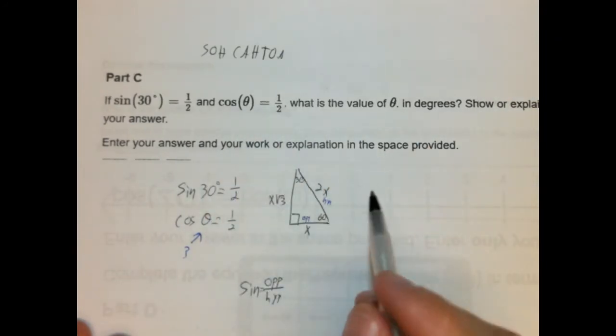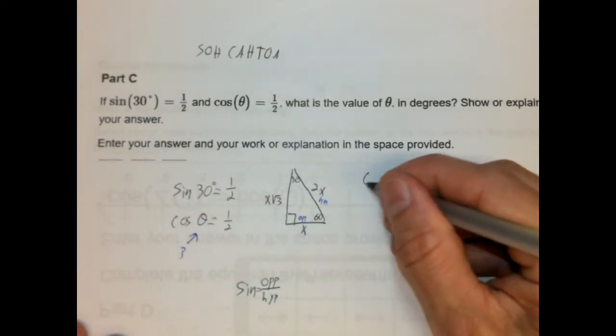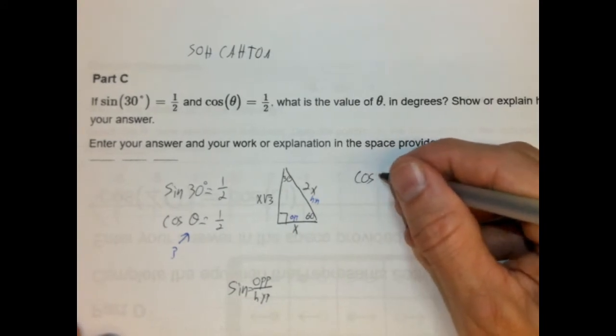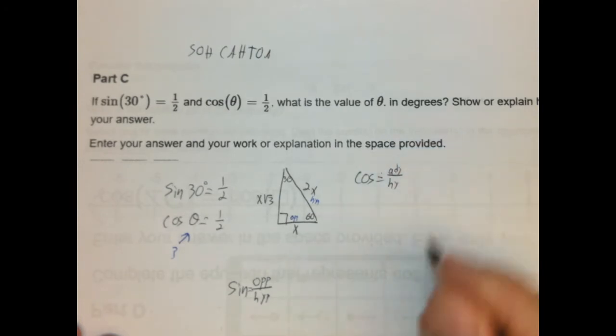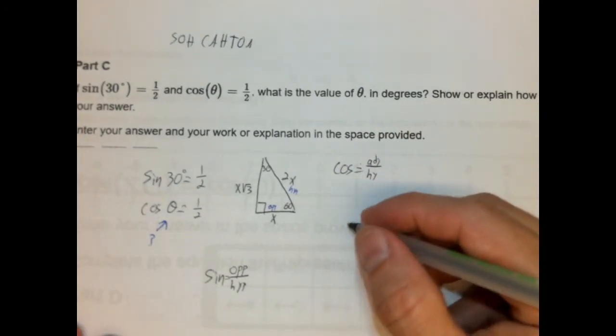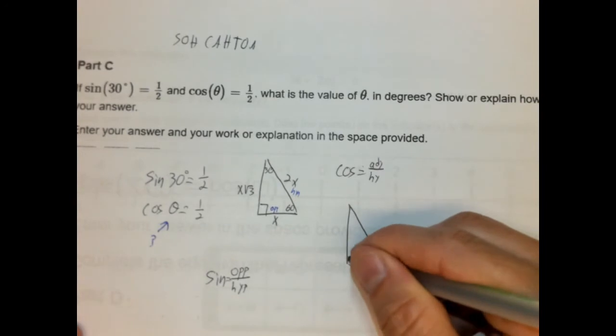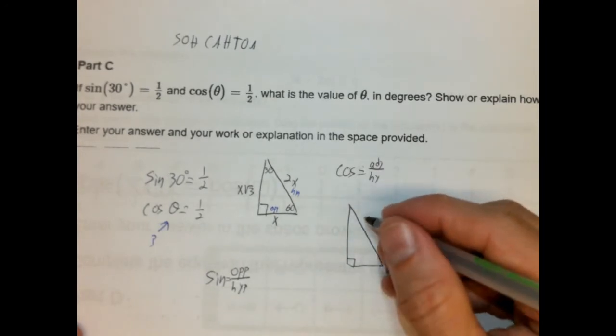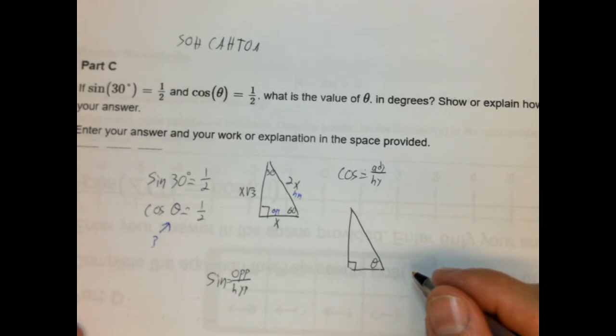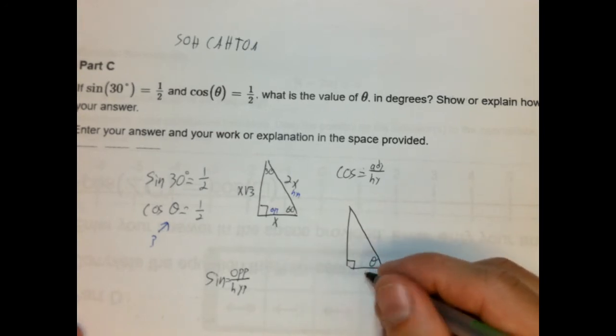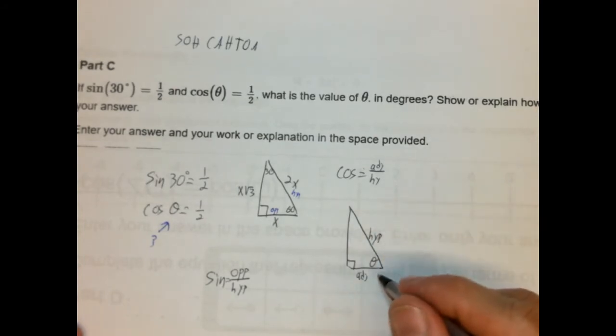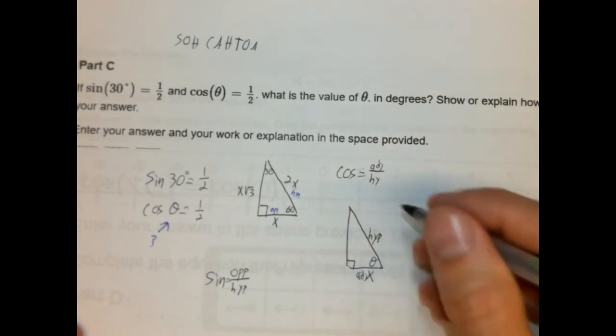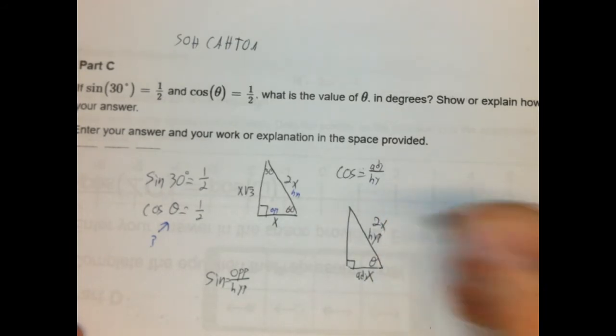If cosine of theta is 1 half. So, a cosine is going to be adjacent over hypotenuse. So, let me draw a triangle here. Okay. And this is going to be our theta. Okay. So, our adjacent would be here. And our hypotenuse is here. Okay. And it's 1 to 2. So, this is x. And this is 2x. All right.